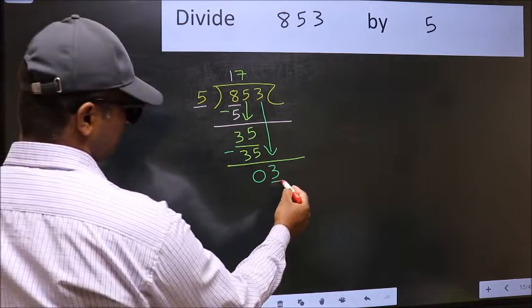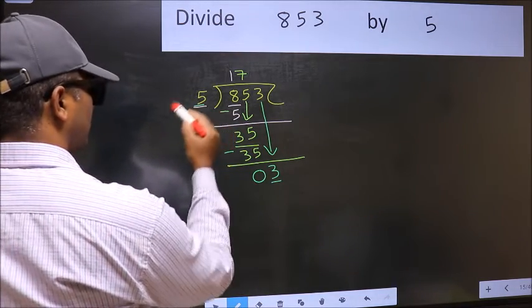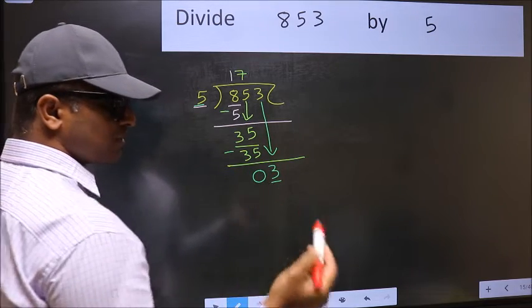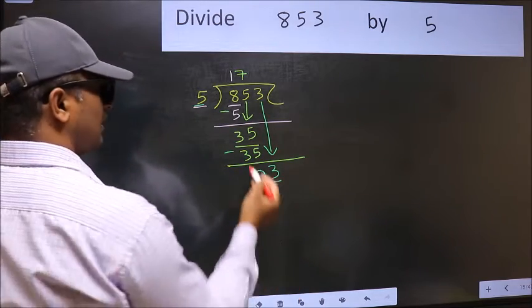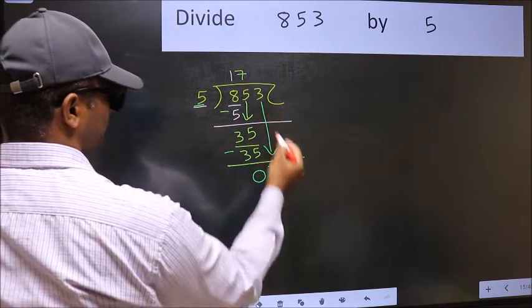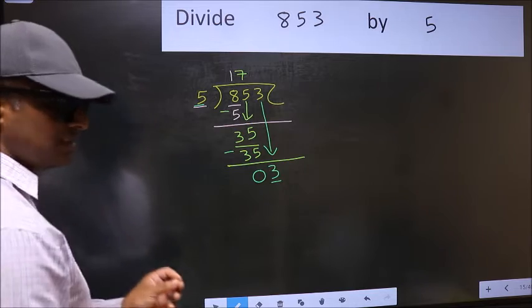Here we have 3 and here 5. 3 is smaller than 5. So what many do is, they directly put dot and take 0. Which is wrong.